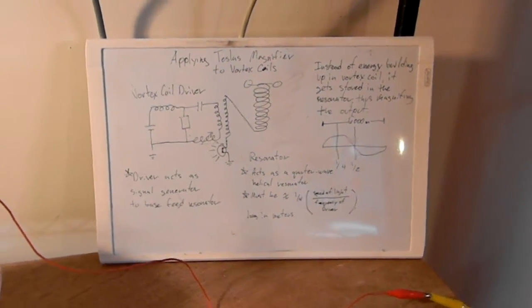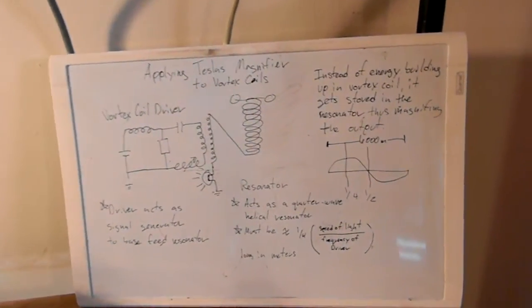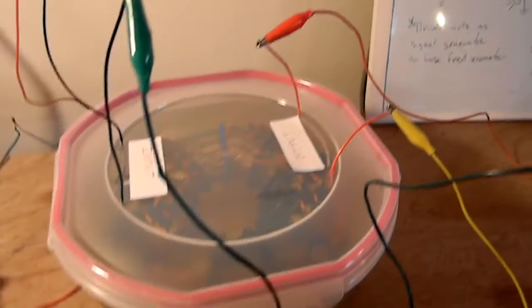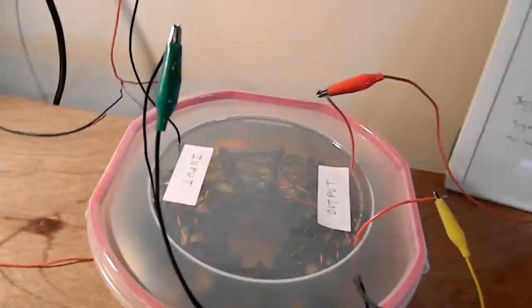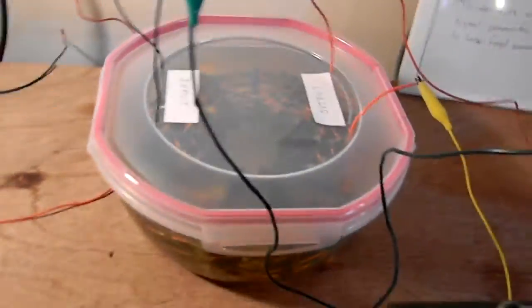So what I've been doing is I've been applying Tesla's magnifier theory to the vortex coils I built. I put my vortex coil in vegetable oil so now I can't make ozone anymore.